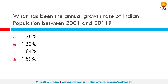What has been the annual growth rate of the Indian population between 2001 and 2011? The 2001 census of India revealed a population of 107.14 crore. The 2011 census was the 15th census of India and counted a population of 122.12 crore, with the annual growth rate being 1.64 percent.